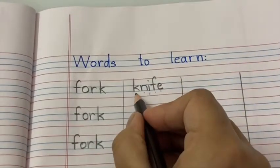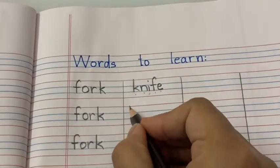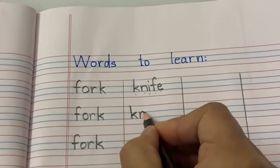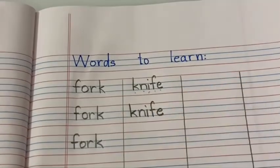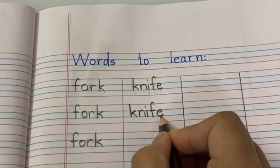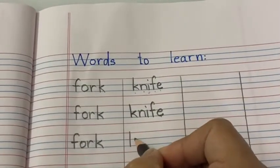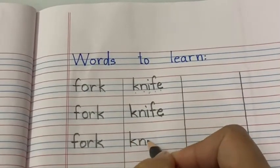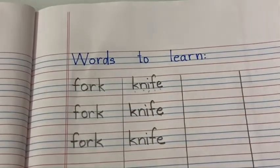We will write K but we will not say the sound. Okay. Spelling is K-N-I-F-E. Knife. K and E are silent. Okay, we will not say the sound. Come on. Knife. K-N-I-F-E. Knife.